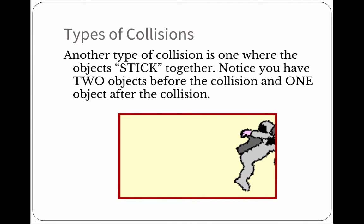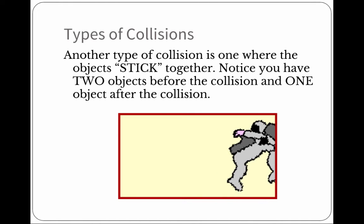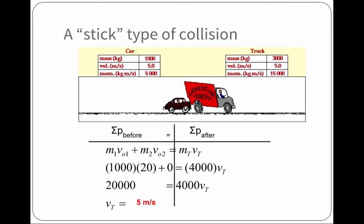Another type of collision is that one that does stick together. Notice you have two objects before they collide and one object after. So, in the stick type of collision, if the car gets stuck to the truck, the mathematics is still the same.